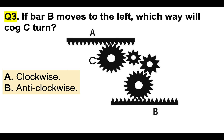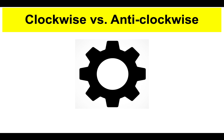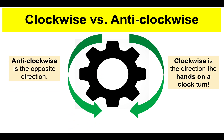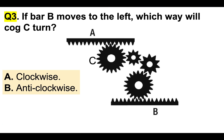Sometimes you would refer to anticlockwise as counterclockwise. It's really important to understand what clockwise and anticlockwise are. In very basic terms, clockwise is the direction the hands on a clock would turn — always remember that as a reference point. The opposite direction is anticlockwise or counterclockwise. Let's go back to the question.